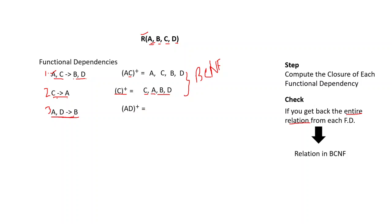Let us compute the closure of AD. The closure of AD will give you A, D, and B, but now you are supposed to get back C. Unfortunately, AC gives you B and D, and C gives you A, but there is no functional dependency that gives you back C. So naturally you won't get back C by computing this closure, and if you take all three together the relation is not in BCNF.